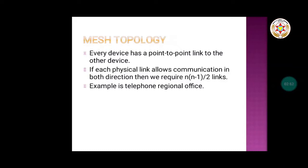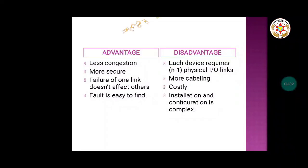The total number of links required becomes n(n−1)/2. An example is a telephone regional office, where the different equipment are connected to each other in a similar arrangement. Advantages of mesh topology include less congestion due to end-to-end connections, more security, and the fact that failure of one link does not affect others — fault isolation is easy. Disadvantages include each device requiring n−1 physical I/O links, making it costly, and installation and configuration being complex.